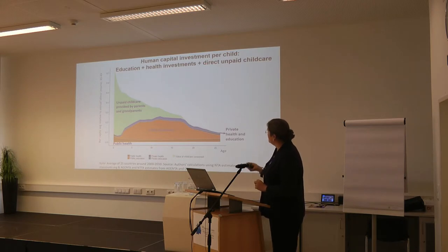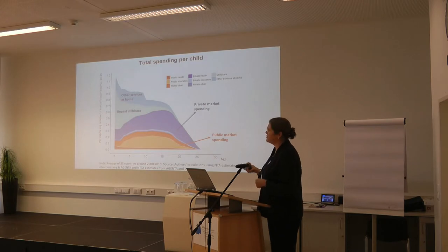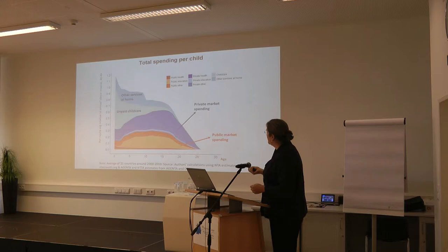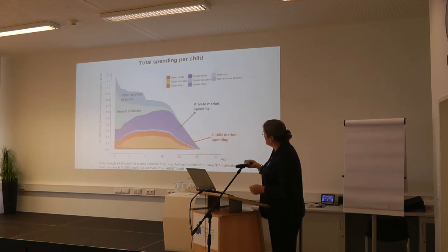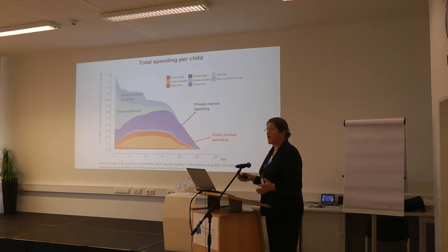This is the human capital investment piece. What does it look like if we also include more general spending on children, both in the market and the household? On the unpaid care work side, we add other services at home — children's share of general housework. Private market spending — food, clothing, shelter — is added here. And public market spending, children's share of general public administration, is a new piece. This gives us spending on children across all these categories up to age 26. If we add up the area under all these curves, we get a synthetic cohort measure of total spending on children — what you would have to spend on a child assuming zero child mortality up to age 26.